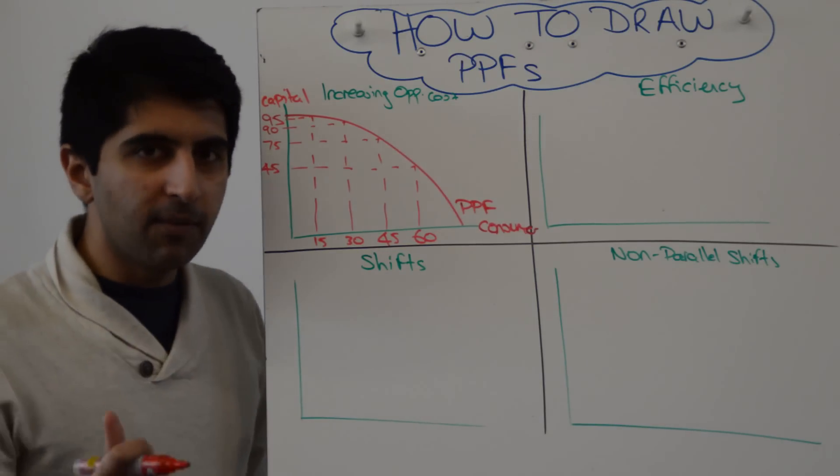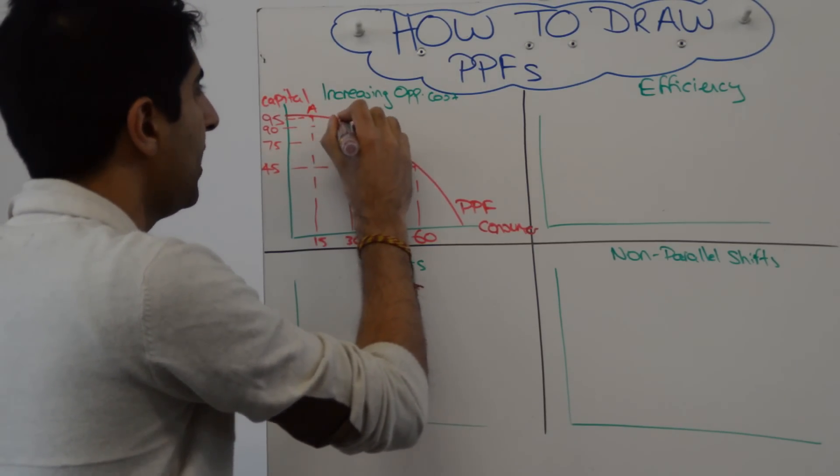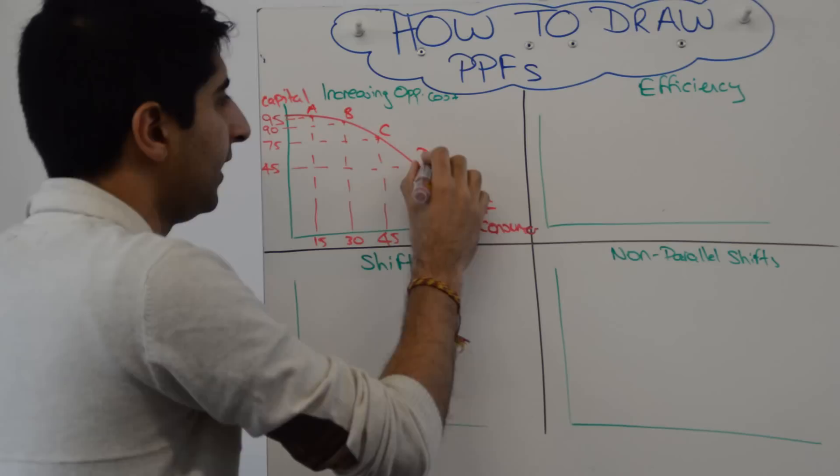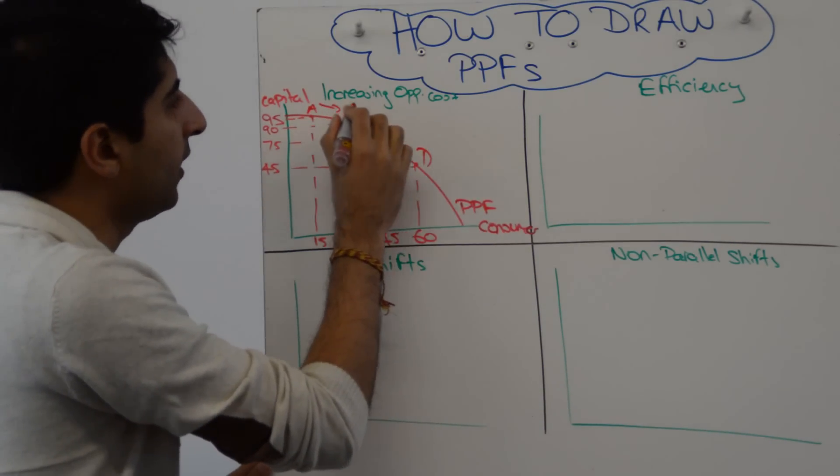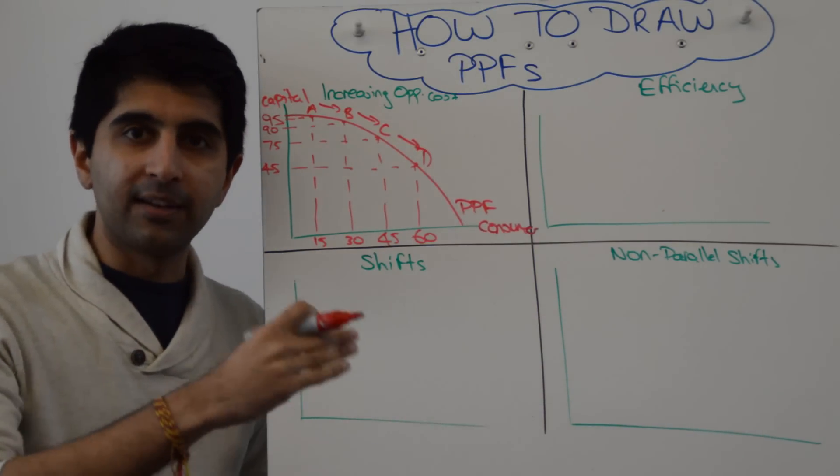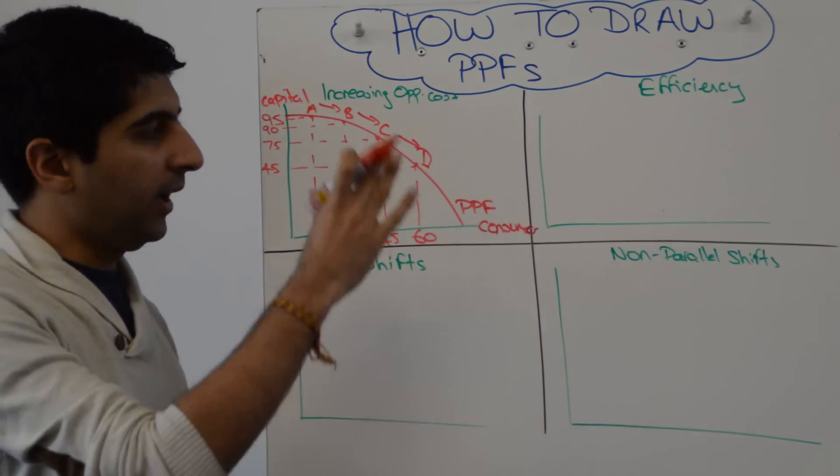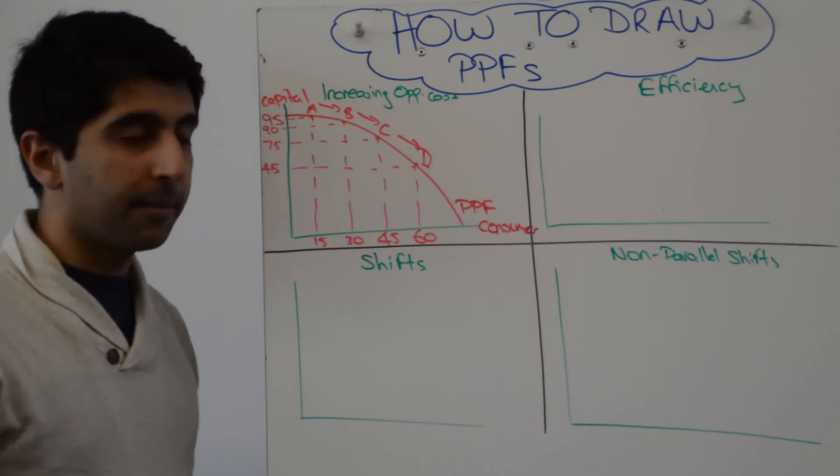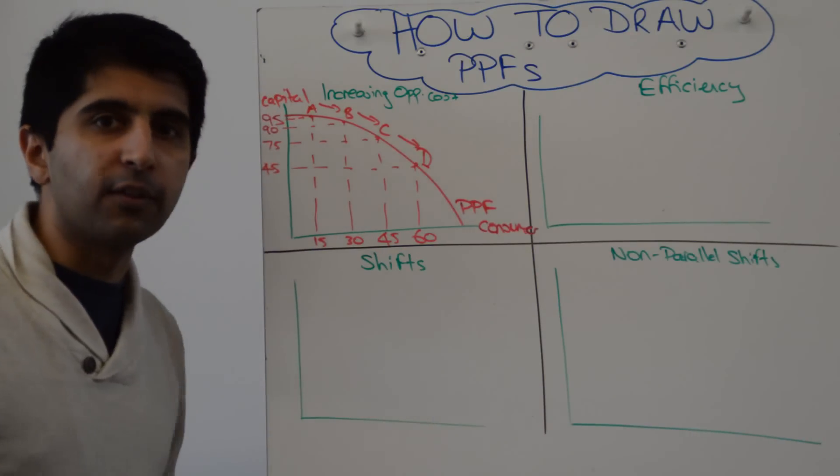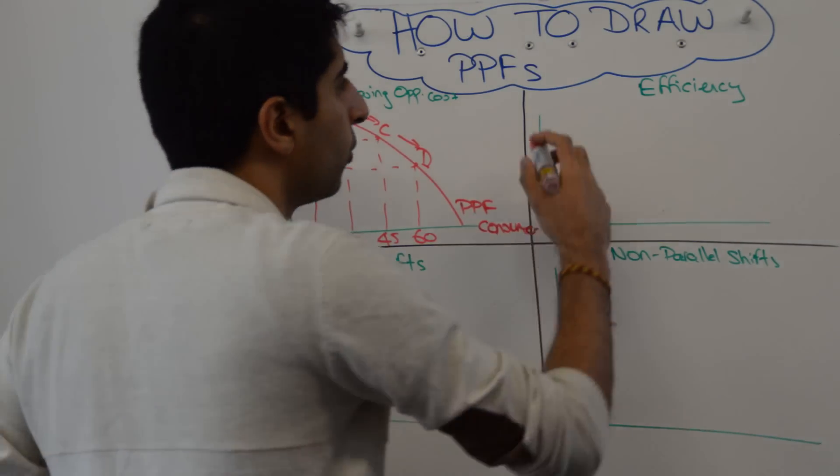To make it even better, you can actually label the points. We started at A, we then went to B, we then went to C, we then went to D. Actually labelling points on the PPF and using arrows to show that we're moving along from each letter to the next letter. That's how you do that. Very good if you're able to do that in an exam - that's nice and detailed for you.